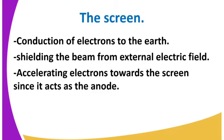Another part of the CRO to discuss is the screen. Since cathode rays cause certain substances to glow, the screen is made of a material with a glowing effect when it comes into contact with the beam of electrons. The screen is connected to the positive terminal so that it can accelerate the negatively charged beam of electrons.